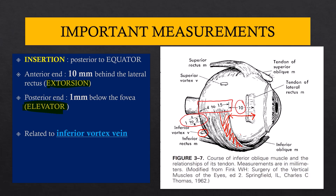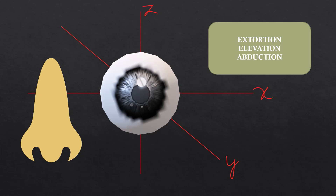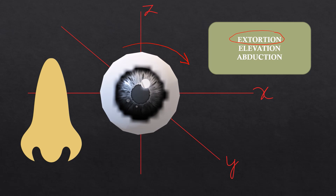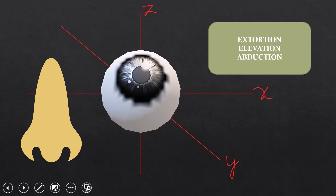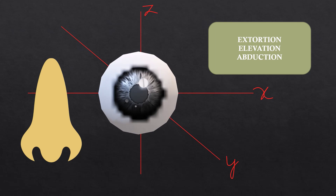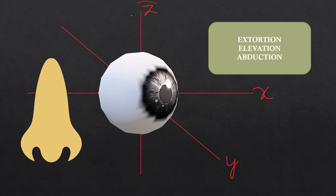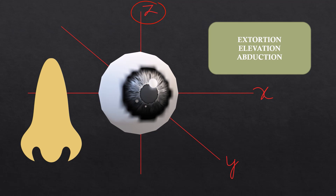The anterior part of the inferior oblique muscle is associated with torsional movements — specifically extorsion — while the posterior end causes elevation. The primary action of the inferior oblique is extorsion, the outward rotation of the eyeball along the y-axis, which corresponds to clockwise rotation. The secondary action is elevation, occurring along the x-axis. The tertiary action, common between inferior and superior oblique, is abduction — outward rotation of the eyeball along the z-axis.